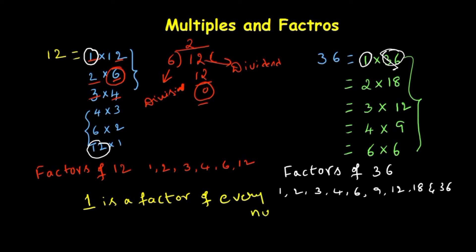The most important point is the next one: the number is a factor of itself. You can observe here we have 12, similarly we have 36. So these two points are very important.